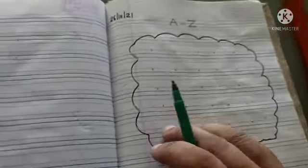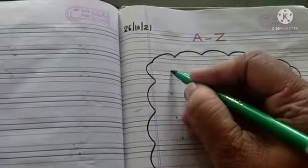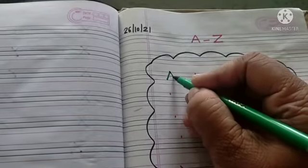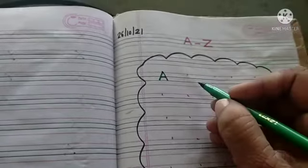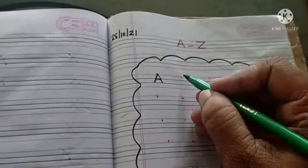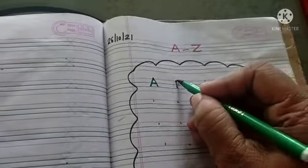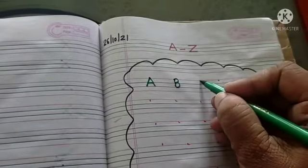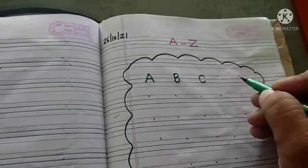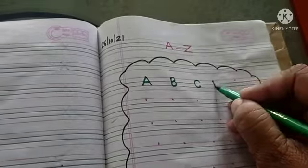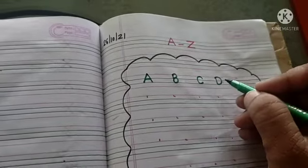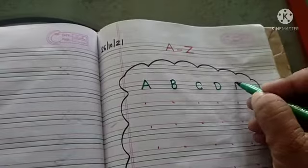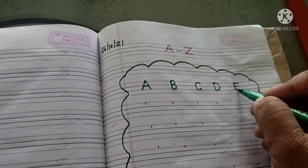First letter of our alphabet is A. A for apple. B for ball. C for cat. D for dog. E for elephant.